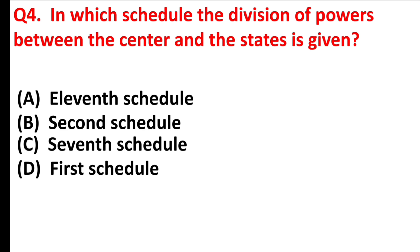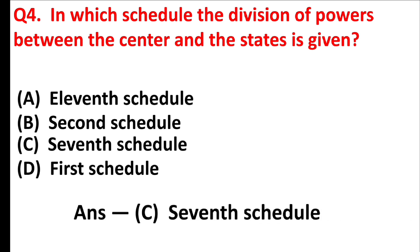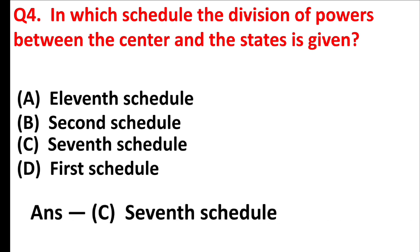In which schedule is the division of powers between the center and the states given? Answer is Option C: Seventh Schedule.